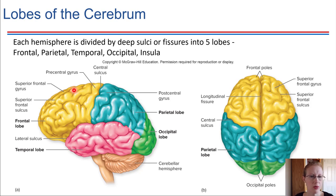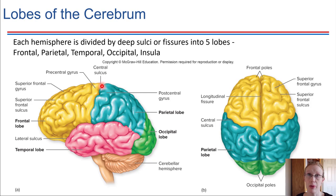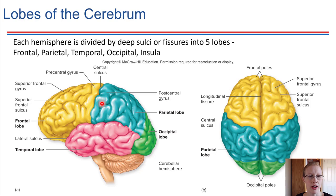Between the frontal lobe and the parietal lobe, there is a major sulcus — a major depression — called the central sulcus. It's one of those grooves that provides a separation between these two lobes of the brain. We'll be focused in on what's going on nearby the central sulcus in just a moment.